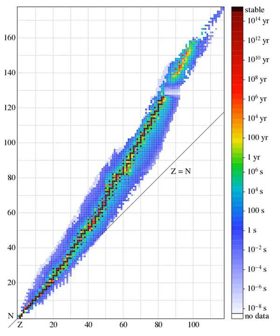The neutron number, symbol N, is the number of neutrons in a nuclide. Atomic number plus neutron number equals mass number: Z plus N equals A.